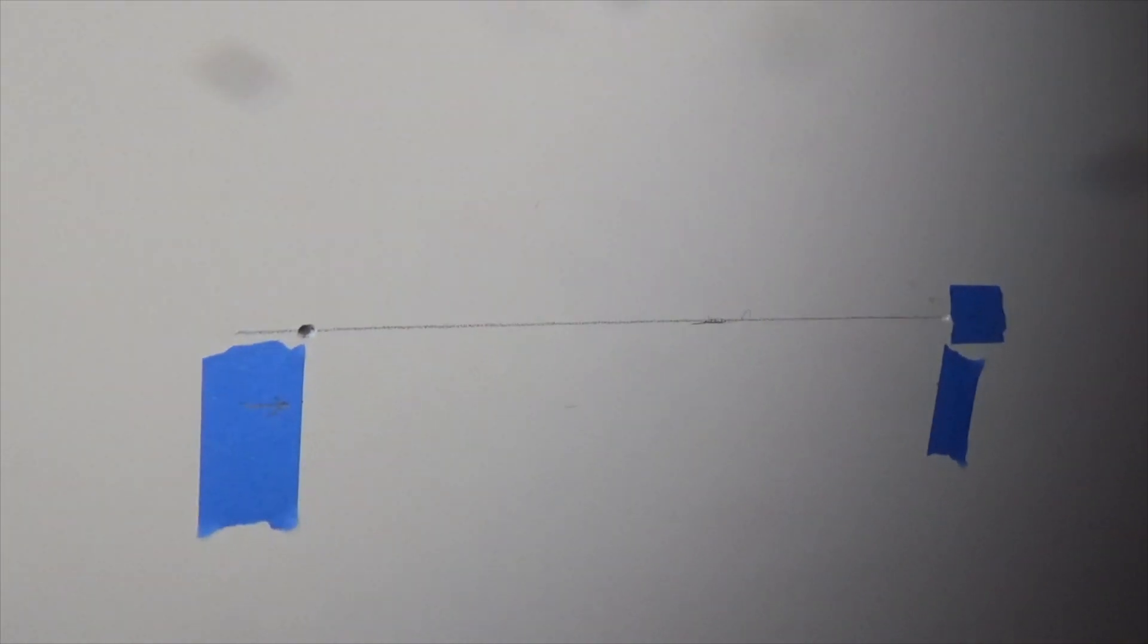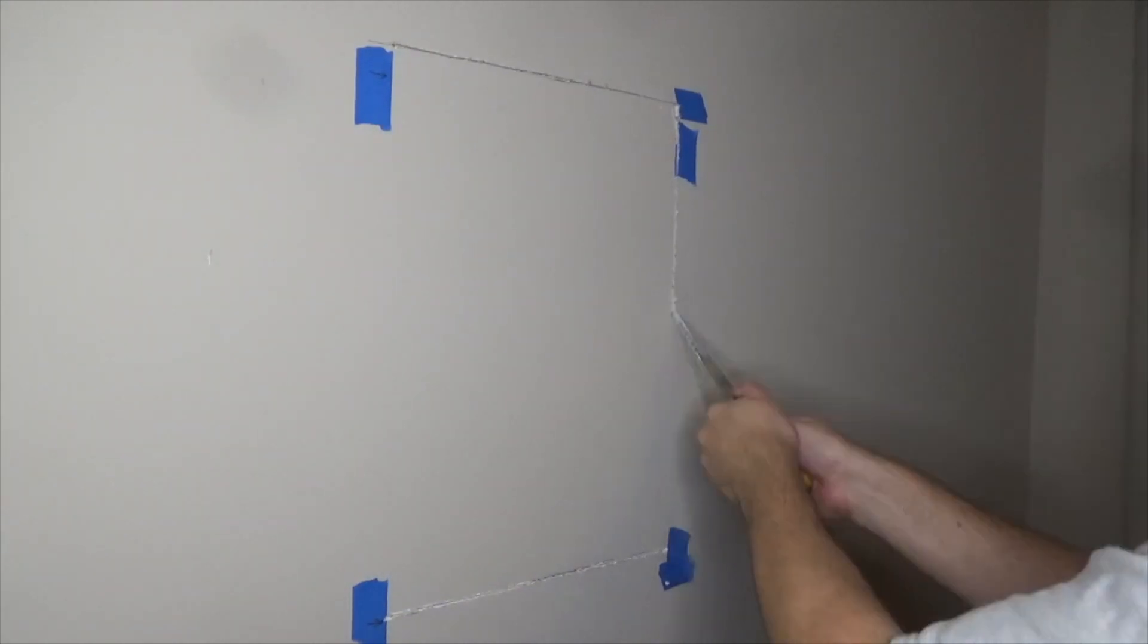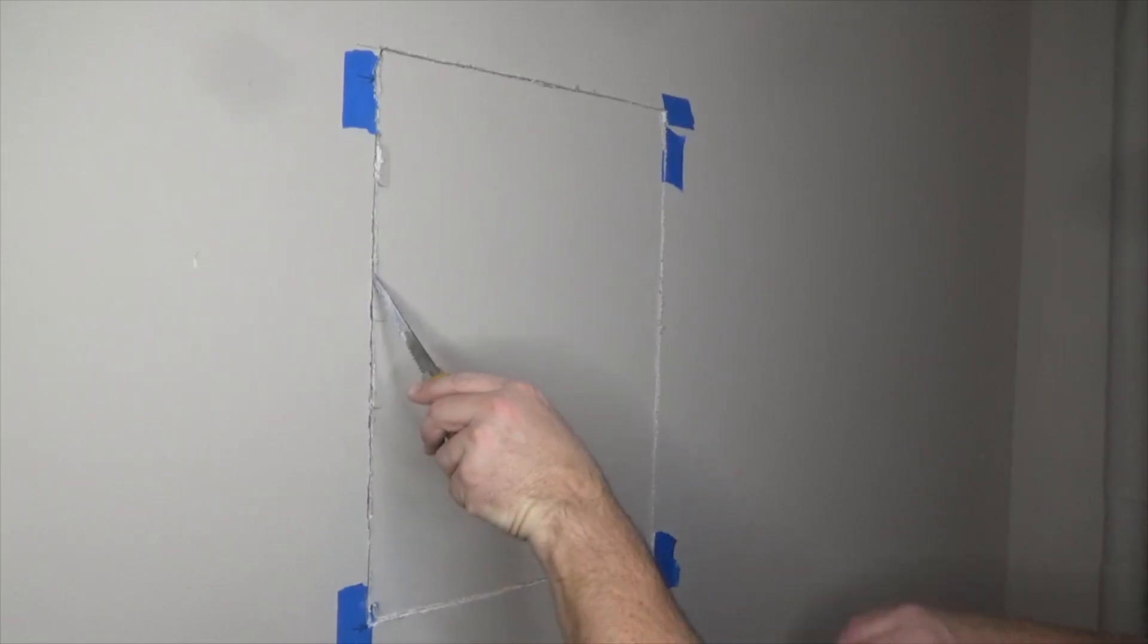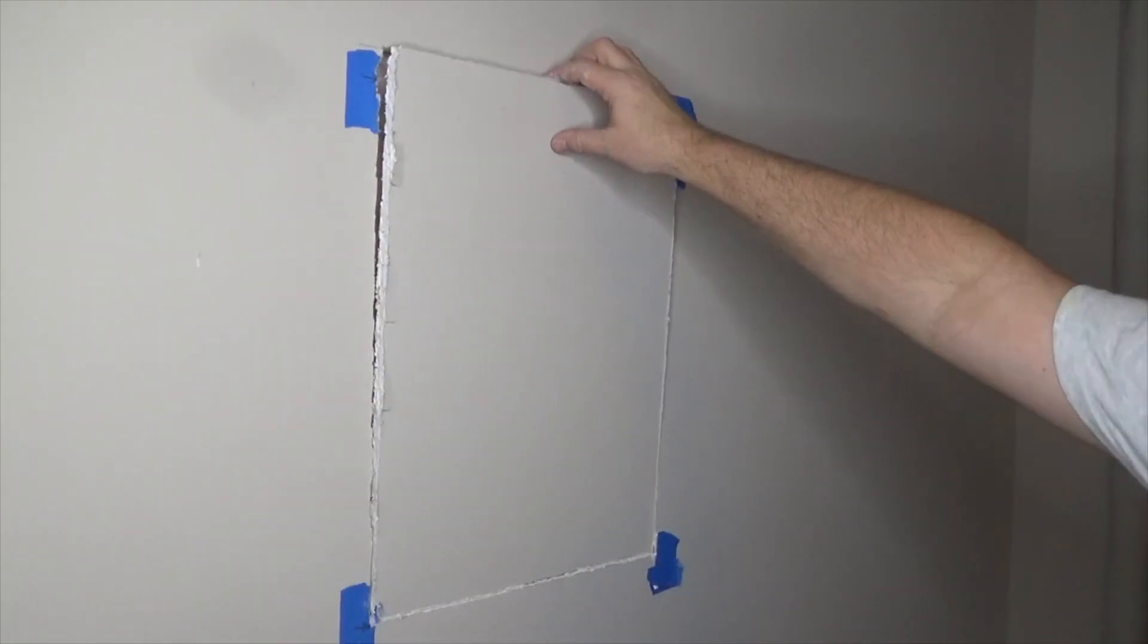Once I completed the bottom cut, I then make the top cut. The sides are easy. You simply cut straight down, using the studs as a guide to keep the blade from wandering. Next, use the blade of the saw to pry out the piece.